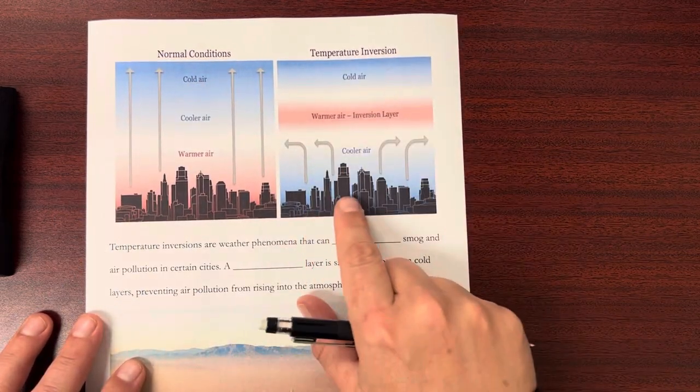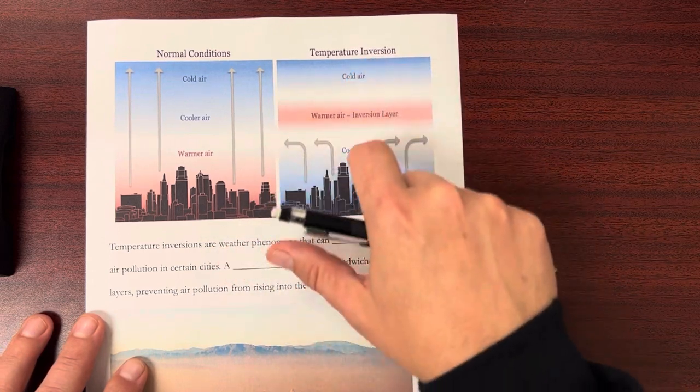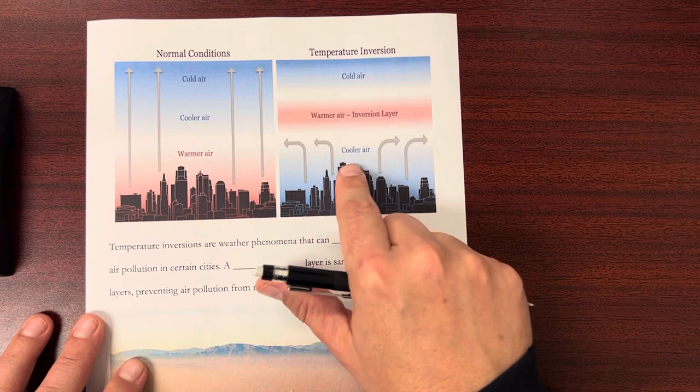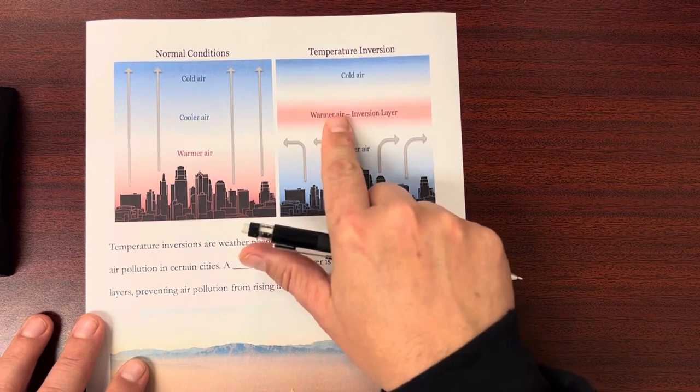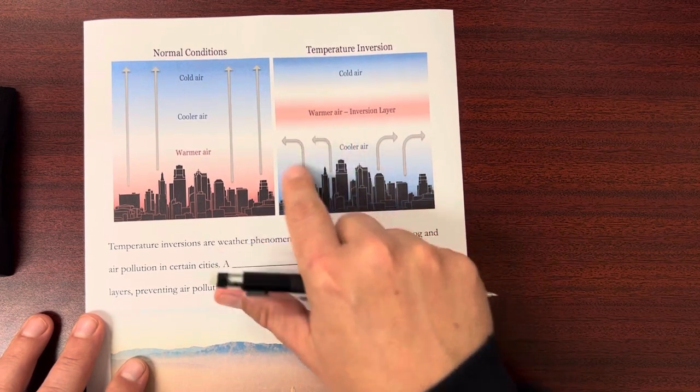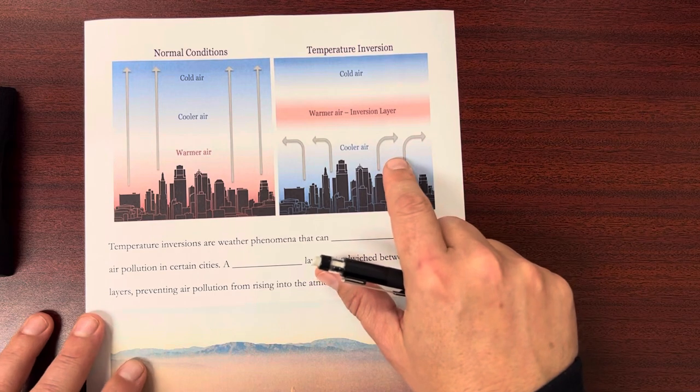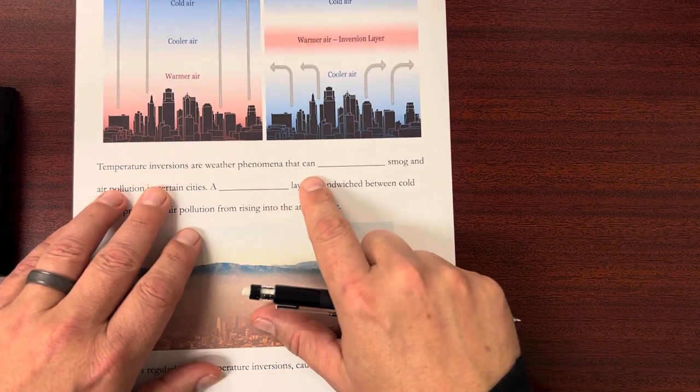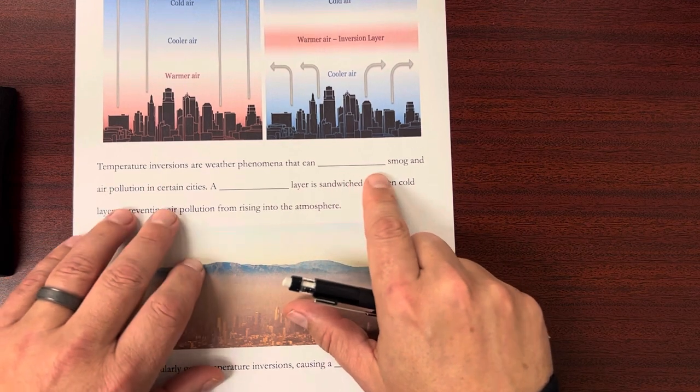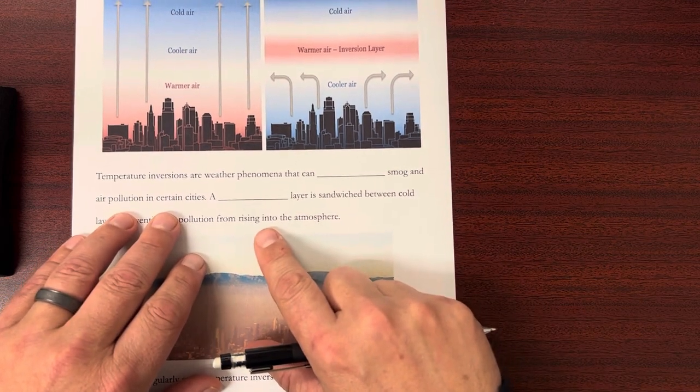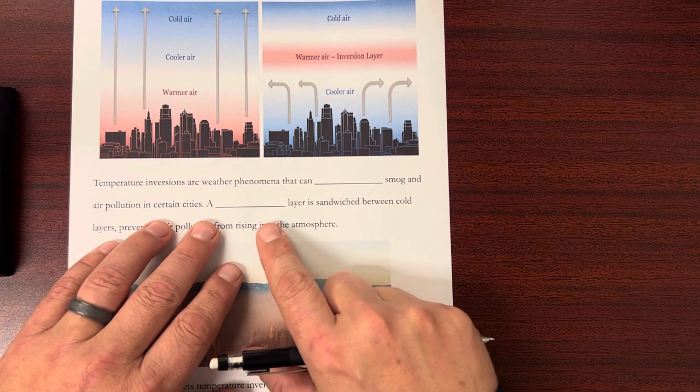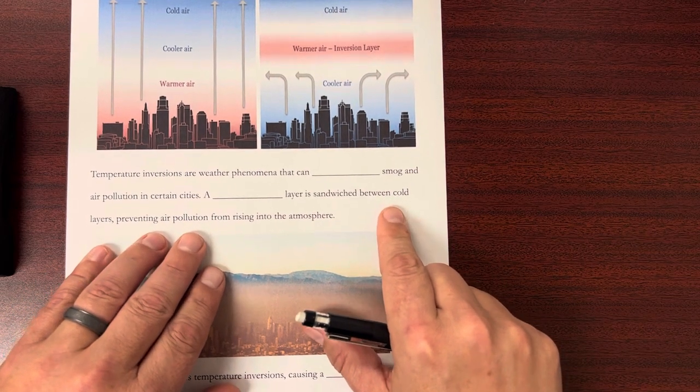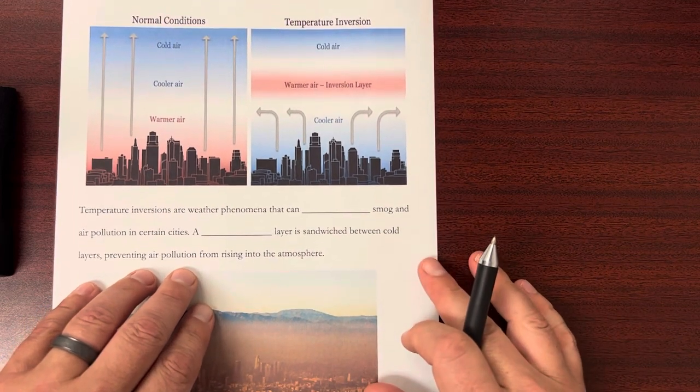Temperature inversions are different. You have a warm layer between two cold layers. This cooler air is more dense and will not go up past that warm layer, so all this stuff gets trapped here. Temperature inversions are weather phenomena that can increase smog and air pollution in certain cities. A warm layer is sandwiched between cold layers, preventing air pollution from rising into the atmosphere.